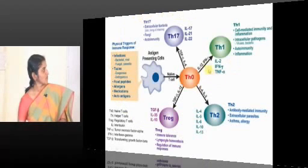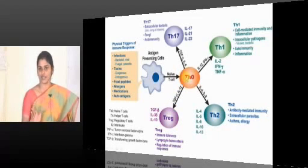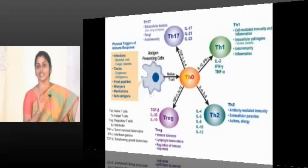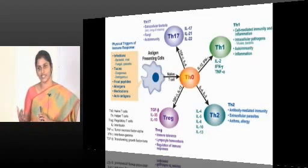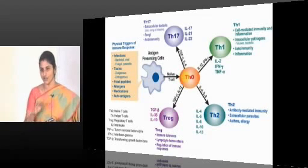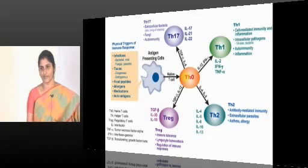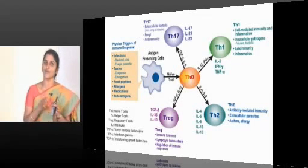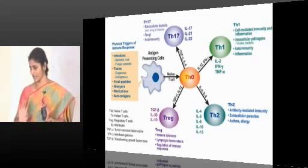Again, short recap. We discussed all these subsets of helper T cells. Some textbook classification systems bring regulatory T cells under helper T cells — there's nothing wrong in it. We need to have regulatory T cells function. What do you expect to happen if regulatory T cells don't function well? They are the ones to bring down suppressive, excessive, unwanted immune response. When they are defective, that will result in autoimmune disease. One of the mechanisms for autoimmune disease development is loss of function of regulatory T cells. That's why you should never miss out on the helper T cells.